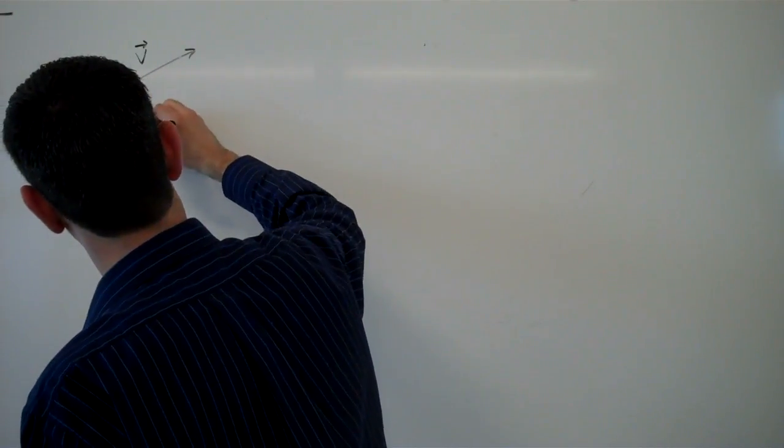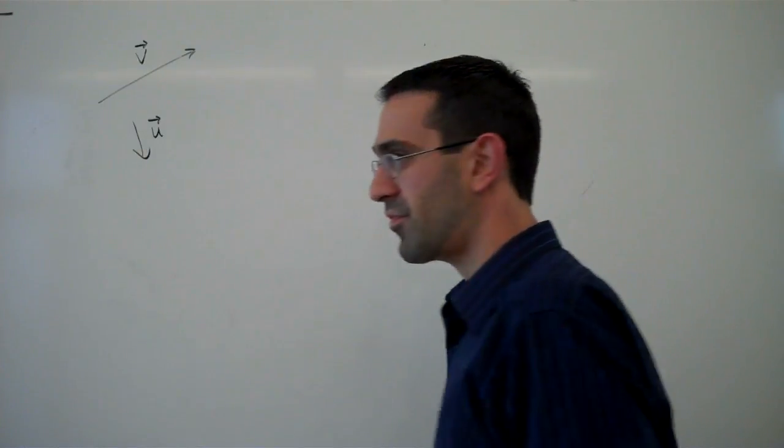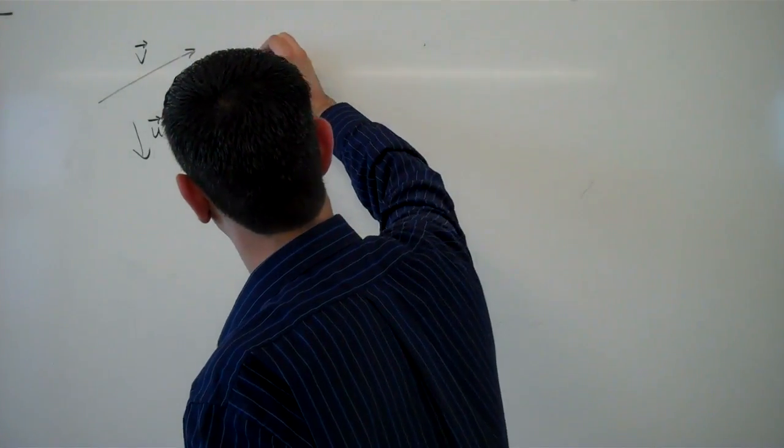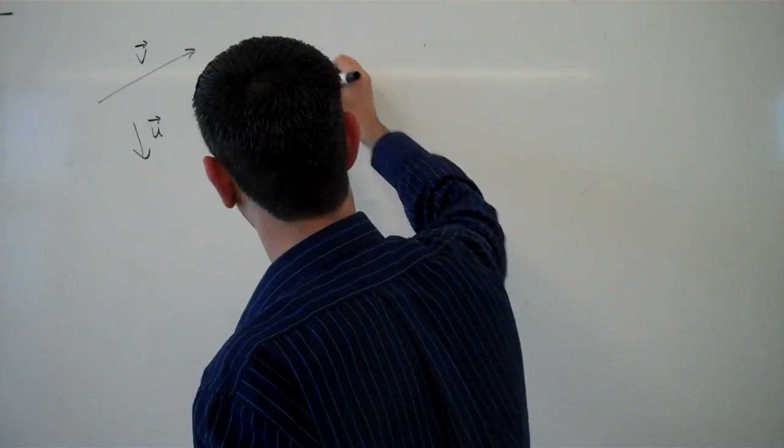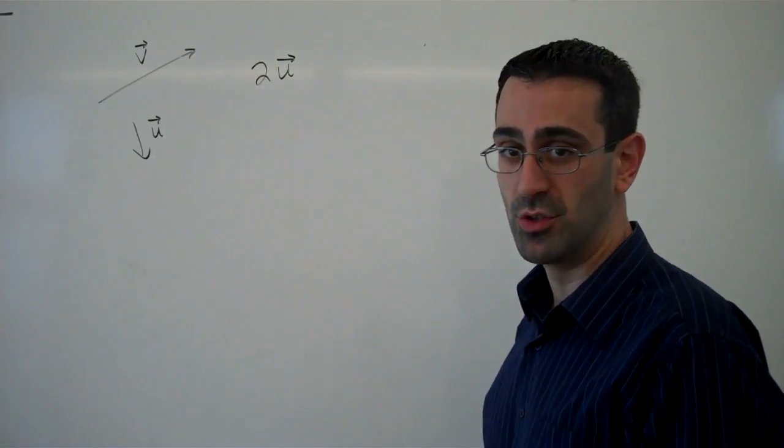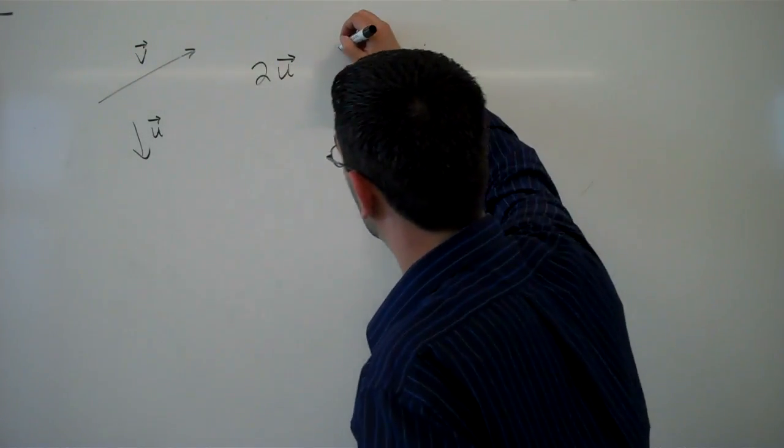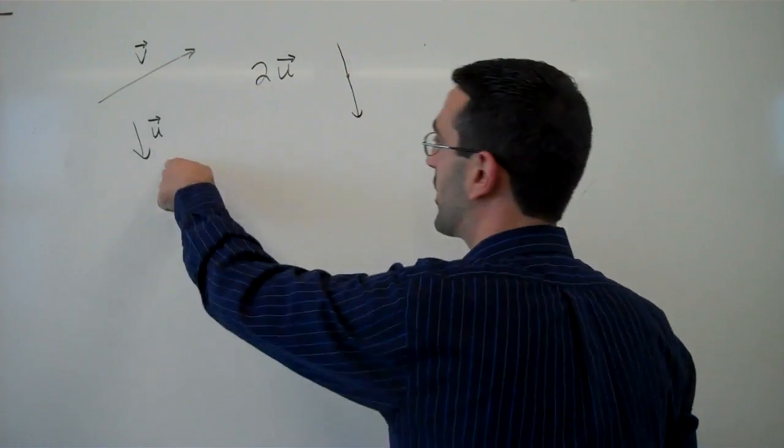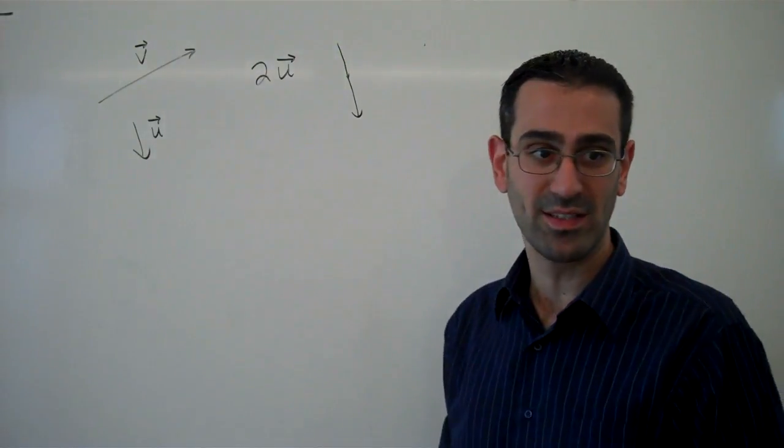Now if I have two vectors, vector v and vector u, there's a few things that we can do with them. One of them is scale the vectors. If I wanted to look at the vector 2u, that would be 2 of u, and so that would be 1, 2, u. So it points in the same direction as u, but it is twice as long.